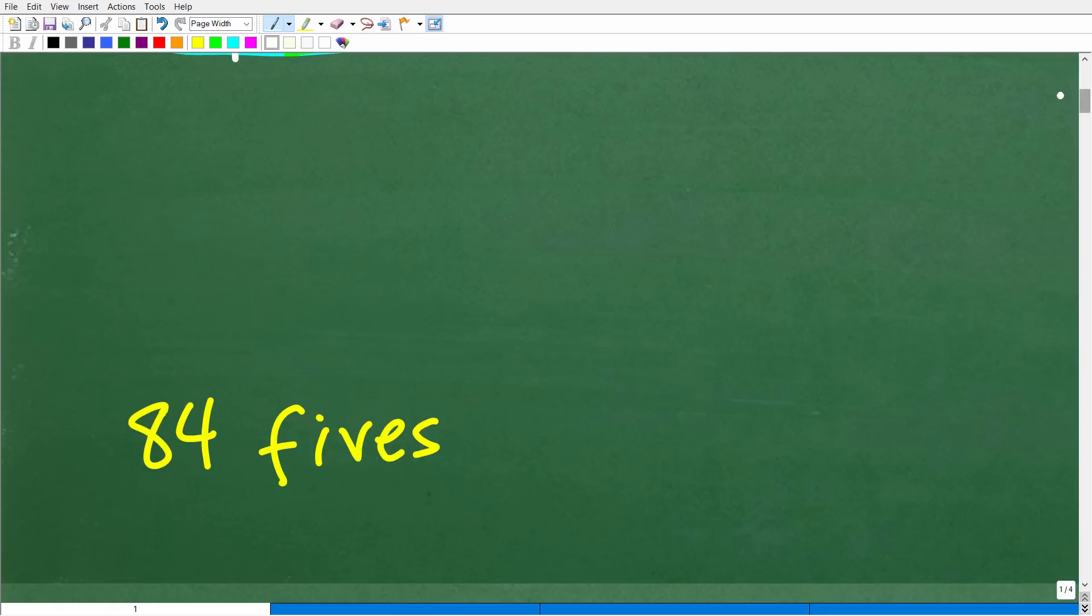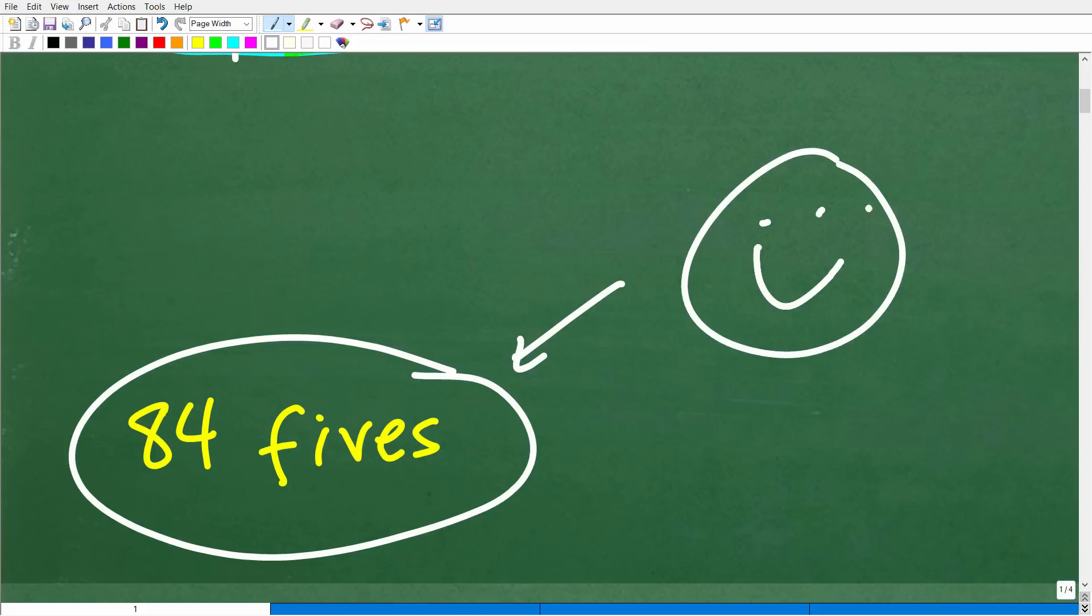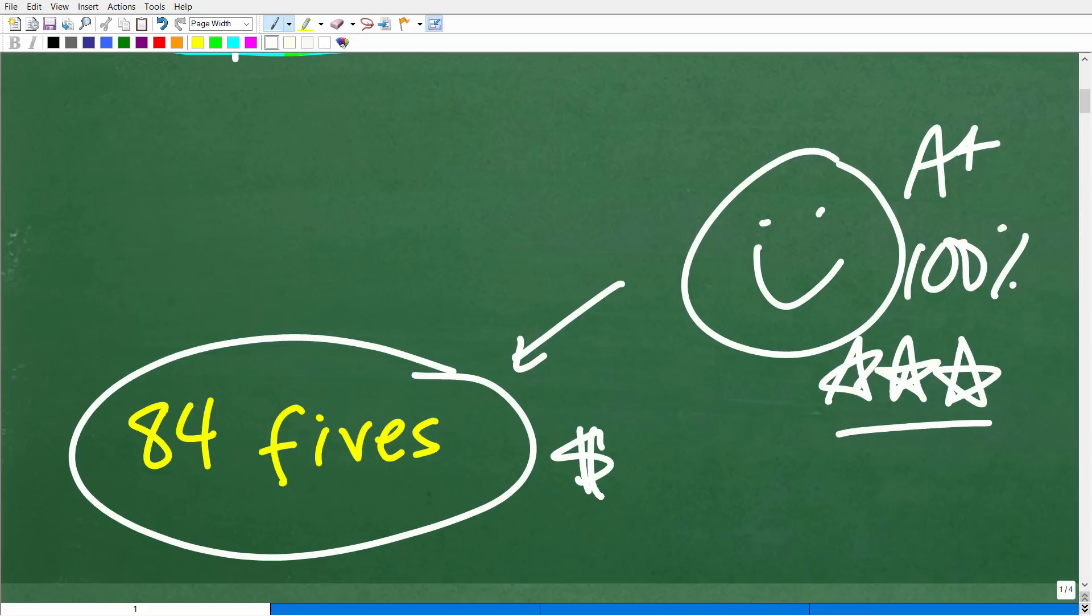He has 84 fives. Okay, so how'd you do? Well, if you got this right, we have to celebrate by giving you a nice little happy face and A plus, 100% and multiple stars. As a matter of fact, somebody might be saying, maybe I should get the money for solving this problem, these 84 fives. Well, listen, that would be pretty cool if I could just transfer that money. But anyways, nevertheless, you should feel great about yourself for solving this problem.